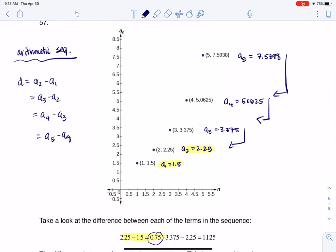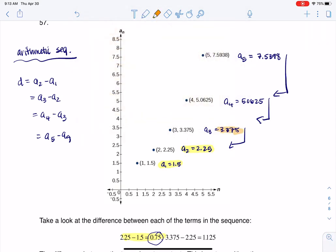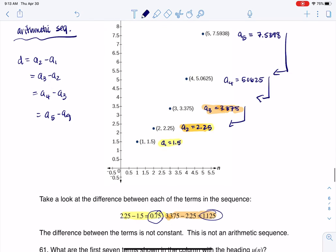And it's fine if I don't, I just need to recognize that. So the next thing I did was I took a sub 3, and I subtracted from it a sub 2, and you see that down here. But you see that that difference was not 0.75, it was 1.125. So the difference between the terms is not constant, and this is not an arithmetic sequence.